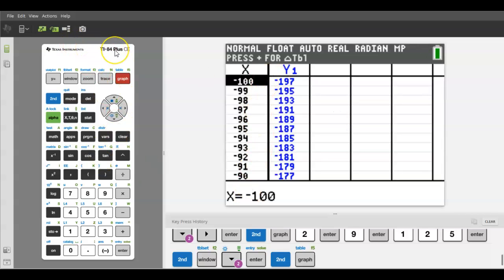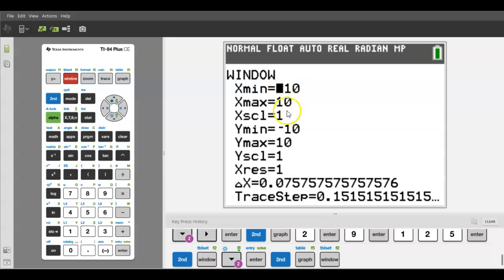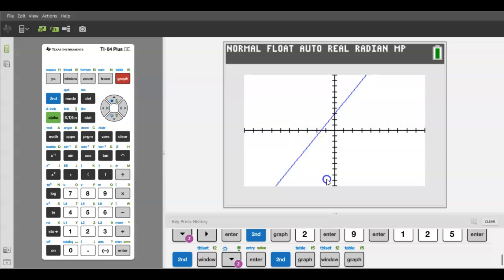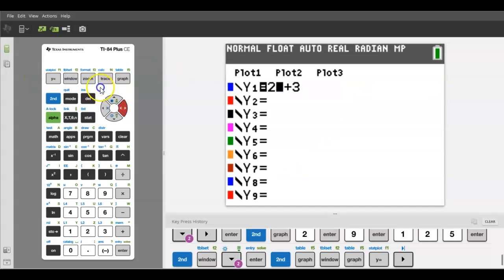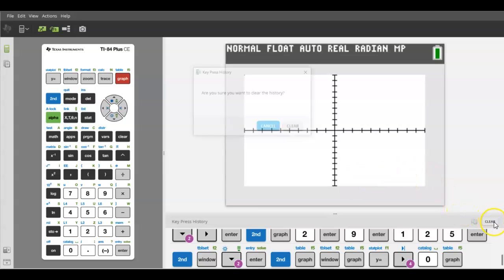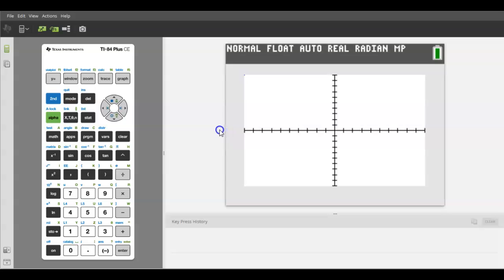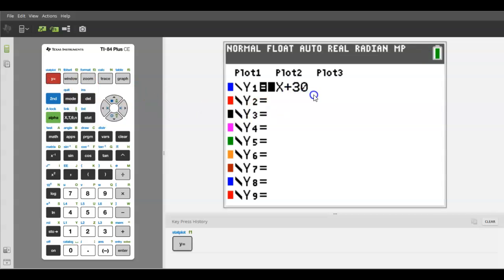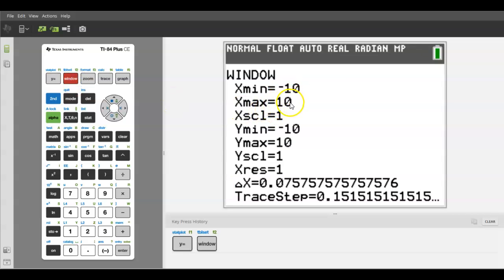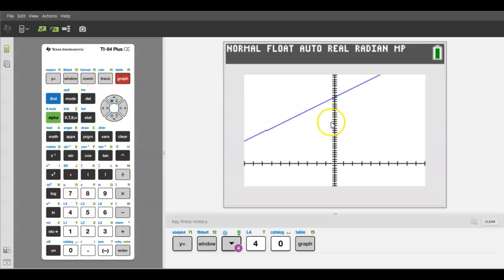Let's talk about the window. The window right now is set to negative 10, 10, 10 with an x scale of 1. That means when I look at my graph, it's going from negative 10 to 10 on the x-axis and negative 10 to 10 on the y-axis. Let's say the teacher asked me to graph 2x plus 30. I hit graph and I don't see anything. Why not? Well, the y-intercept is 30 here, and my window is just going from negative 10 to 10, so it's not going up high enough. I need to go back to the y max and change it to 40 so I can see that y-intercept of 30.